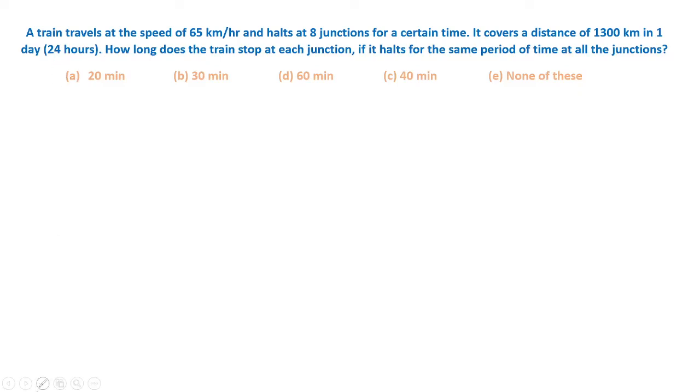Here's the question: A train travels at a speed of 65 km per hour and halts at 8 junctions for a certain time. It covers a distance of 1300 km in one day, which means in 24 hours.